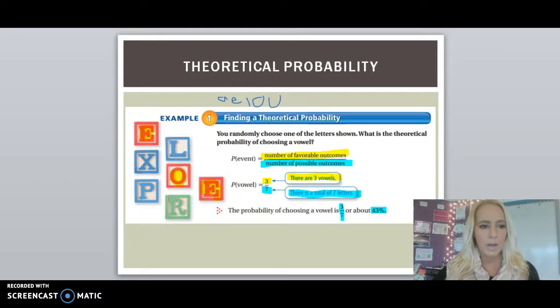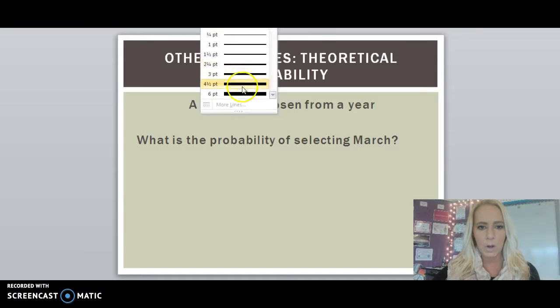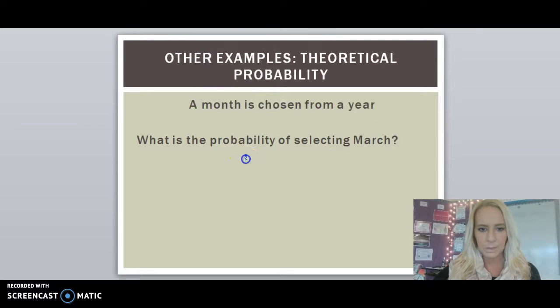So a month is chosen from a year. What is the probability of selecting March? Well, you can only select March once. So there's a one out of twelve probability of selecting the month of March. There's one month of March and twelve months total.